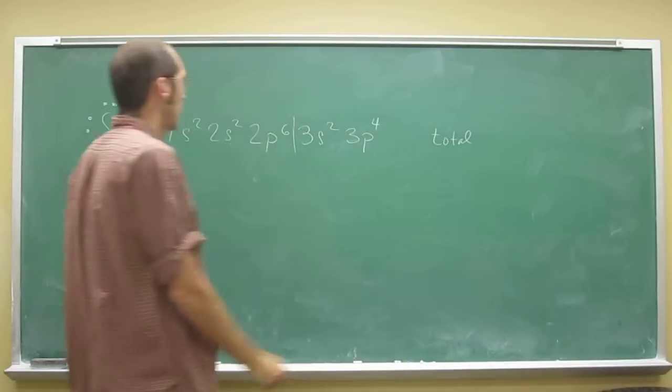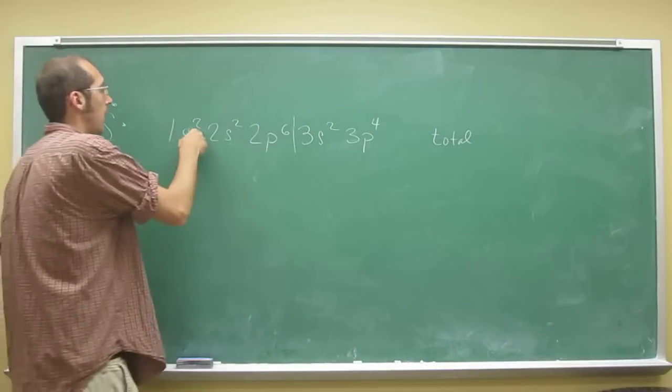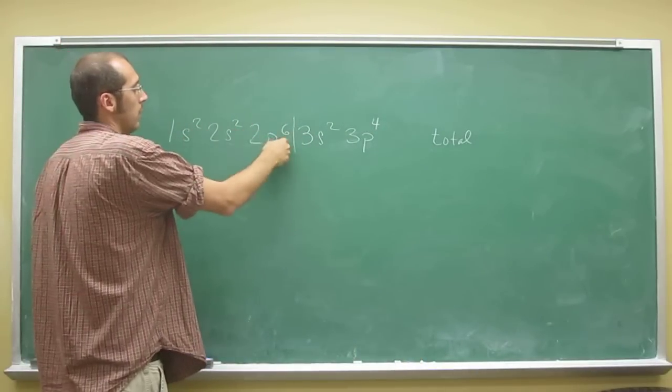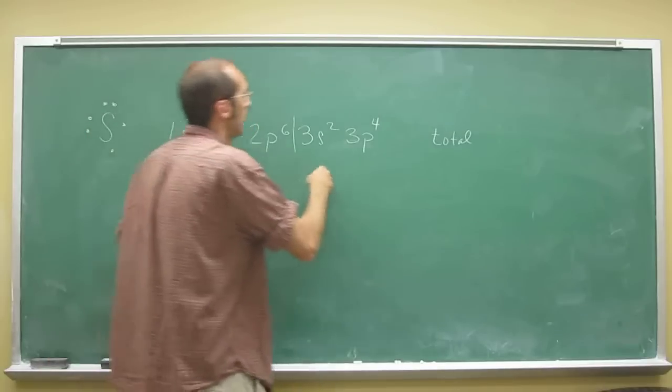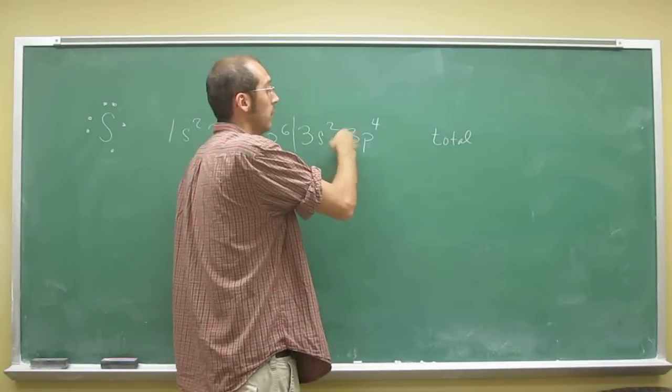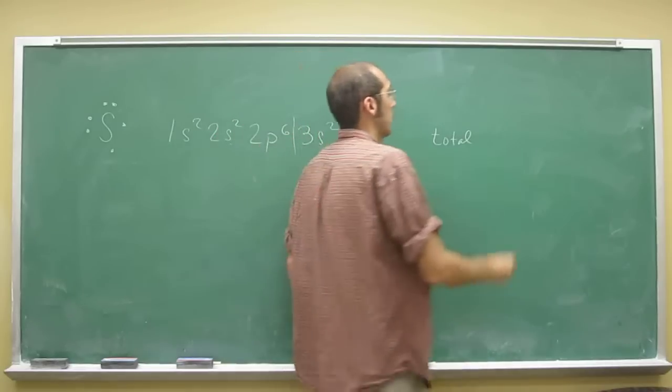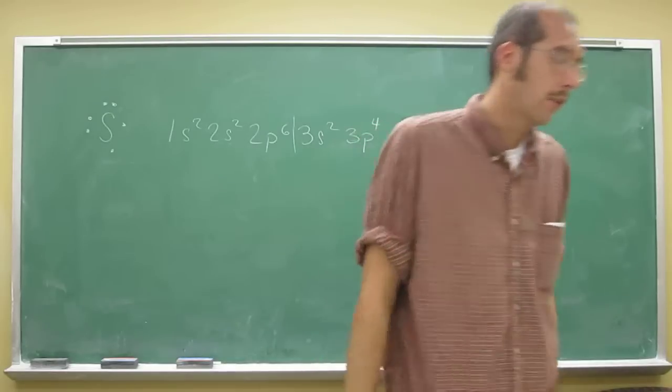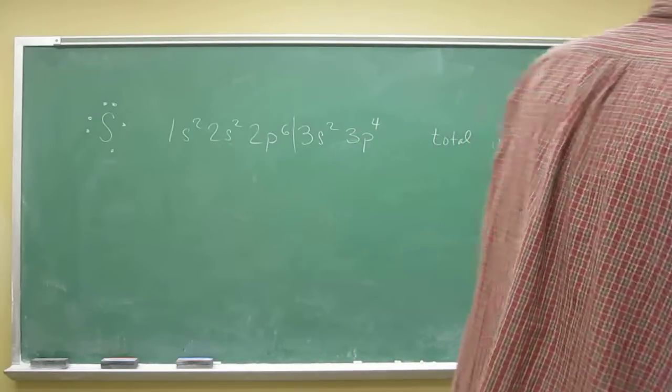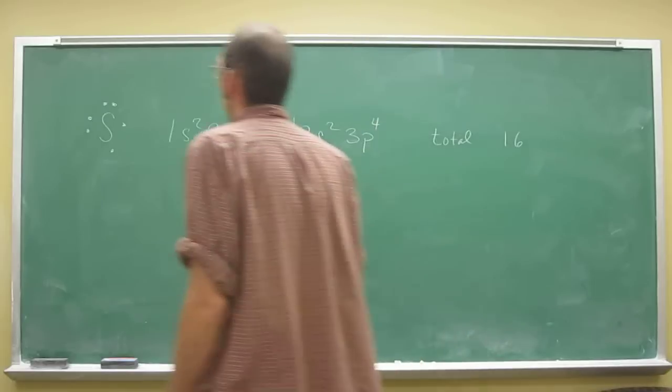So what's the total number of electrons? 2, 4, plus 6 is 10, right? Plus 2 is 12, plus 4 is 16. And again, if you didn't want to go to all that trouble, you could just look at the atomic number for sulfur.